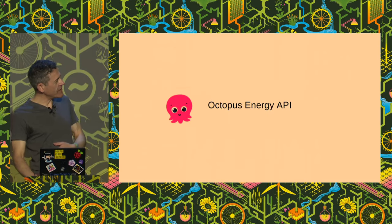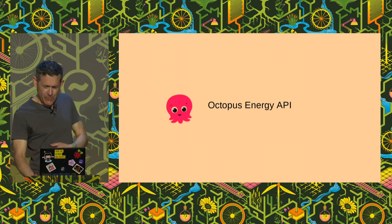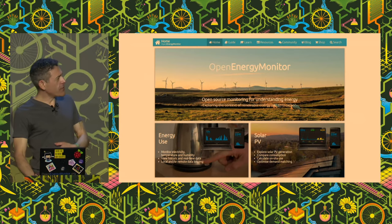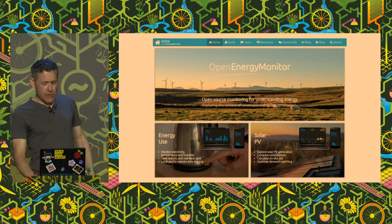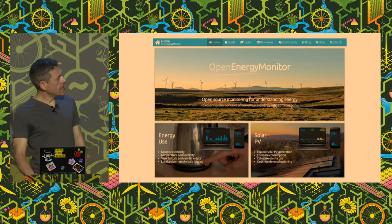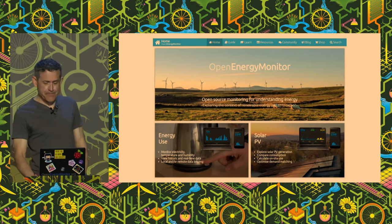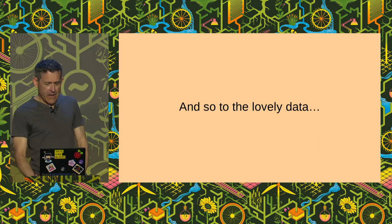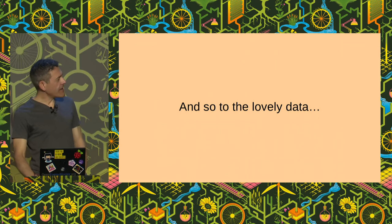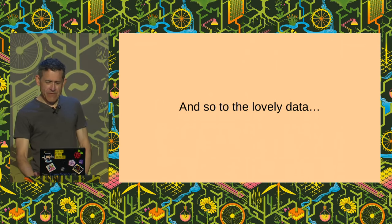I've got a hook into the Octopus Energy API so I can see what's going on with the gas, and we need some software — the very wonderful EmonCMS project from the Open Energy project. And after quite some time tinkering and collecting data, we get some lovely graphs.